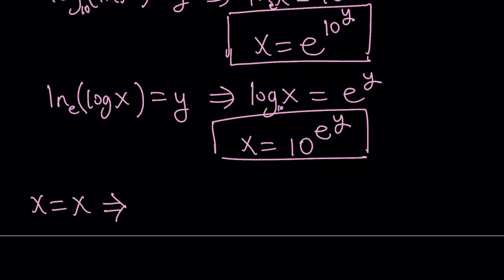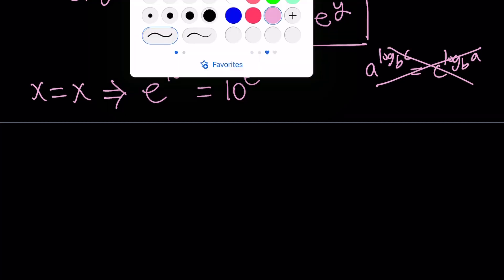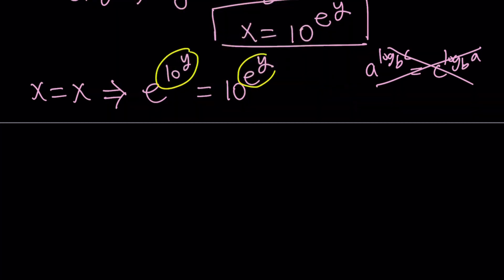From here, we get that e to the power 10 to the power y is equal to 10 to the power e to the power y. We kind of have an interesting property with logarithms that says a to the power log base b of c is the same as c to the power log base b of a or something like that. But these are not always equal. Anyways, so let's see how we can simplify this.